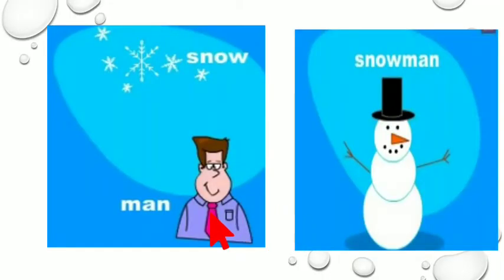Now, one more example. Now, what is it? This is snow and this is man. So when I combine these two different words, it gives me a completely different meaning. That is the snowman. So snow plus man equals snowman. So snowman is a compound word.